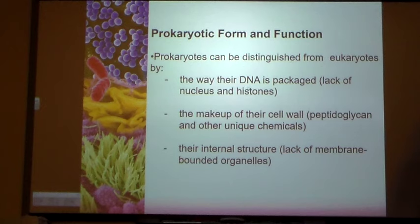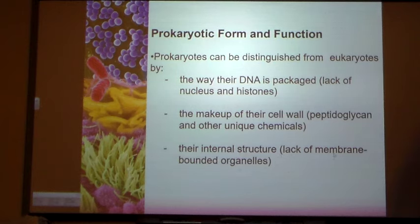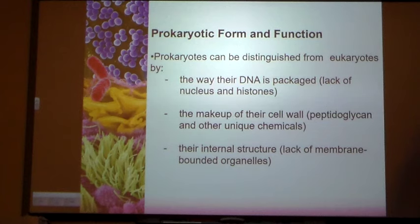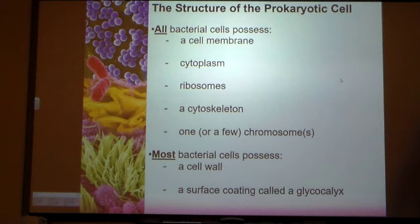Prokaryotes don't have a true nucleus. They don't have membrane-bound organelles. Prominently missing is the membrane-bound nucleus. The way the packaging is also different — lack of nucleus and no histone proteins. The cell wall for bacteria is made of peptidoglycan and some other chemicals. Peptidoglycan is a unique cell wall component to bacteria. We'll take a look at the structure of that later on.